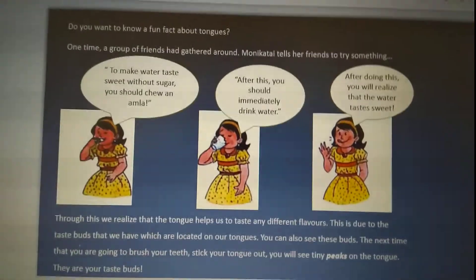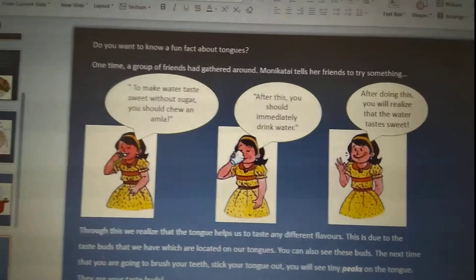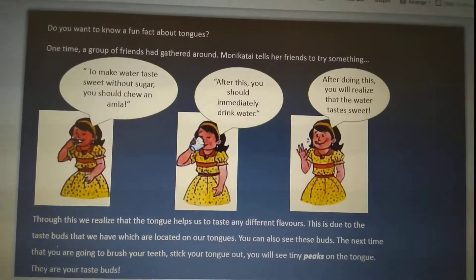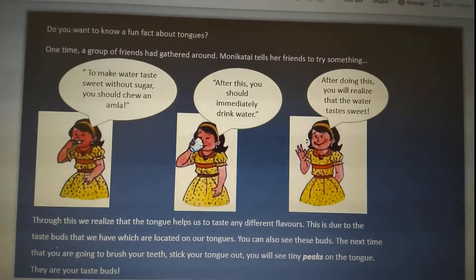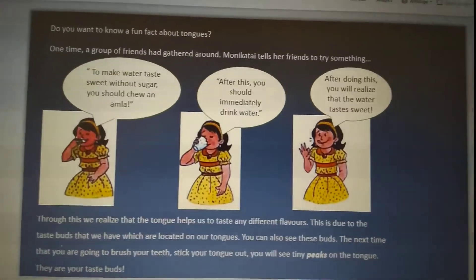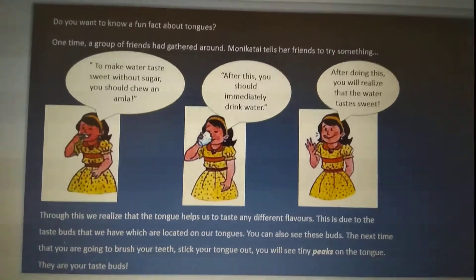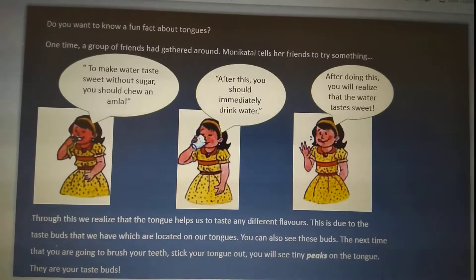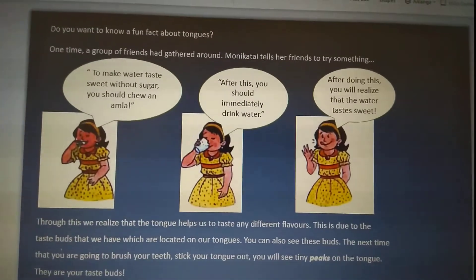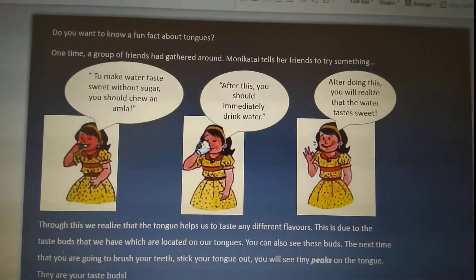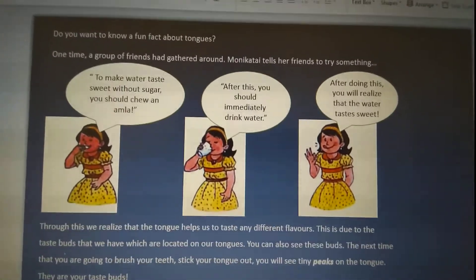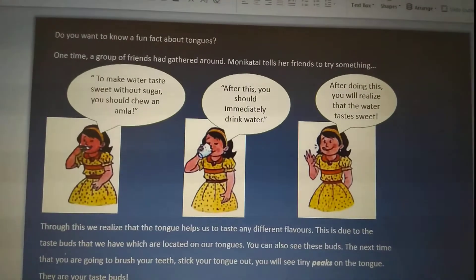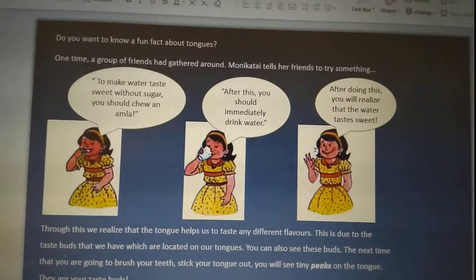Now, can you see in this picture what helps us to taste things? The tongue helps us taste many different things. You will see tiny peaks on the tongue — they are called taste buds. These taste buds tell us the different tastes.